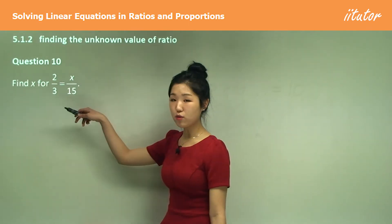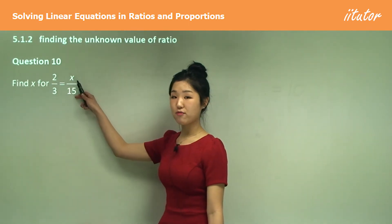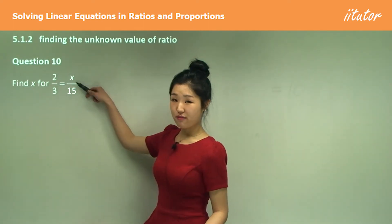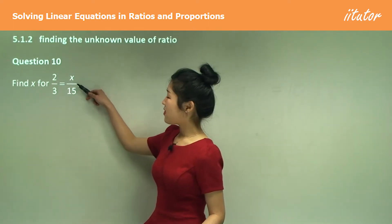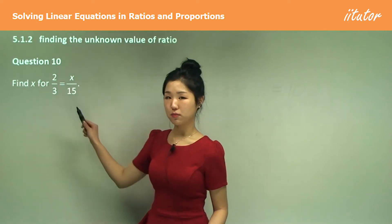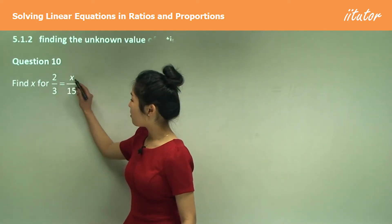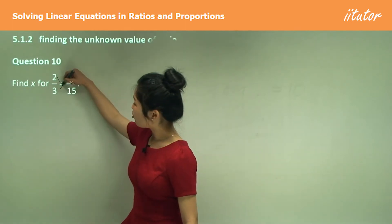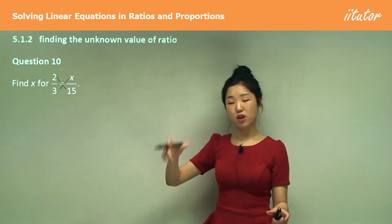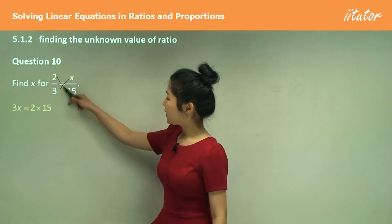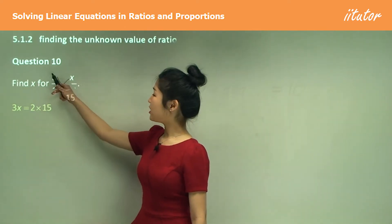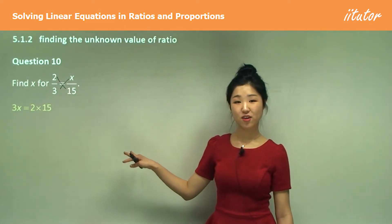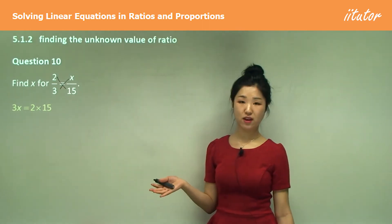When two ratios are equal, you need to find that unknown value. If a fraction equals a fraction, you can always cross multiply. So multiply 3 by x and 2 by 15. That gives you 3x equals 2 times 15.